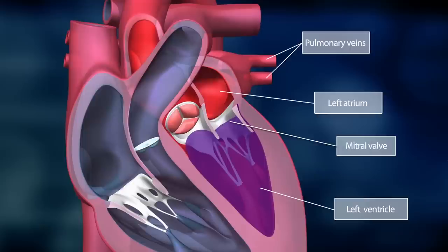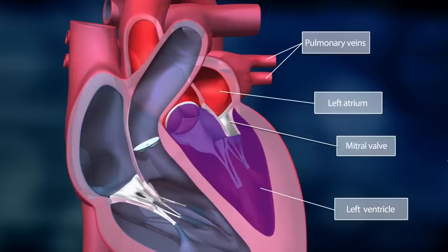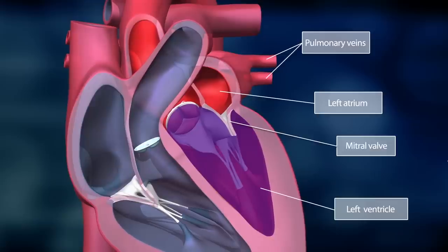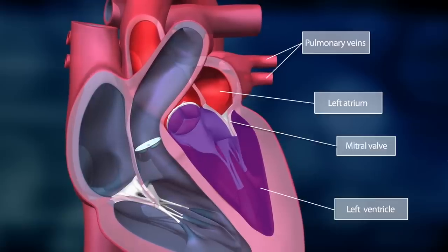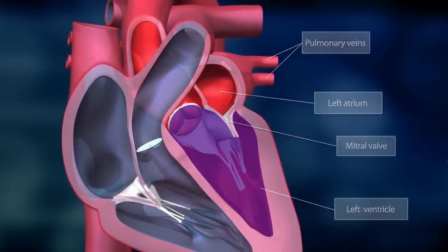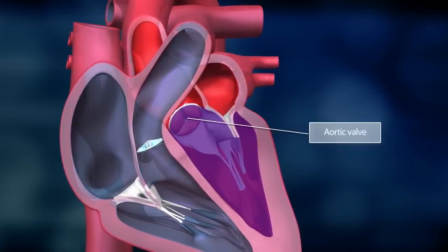As soon as the left ventricle is filled with blood, the mitral valve closes, preventing blood from flowing back into the left atrium. Now the left ventricle contracts and the aortic valve opens.